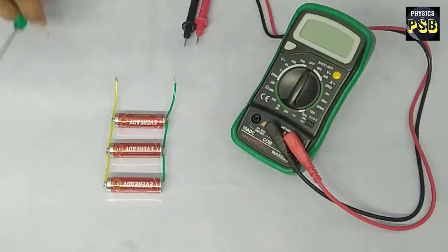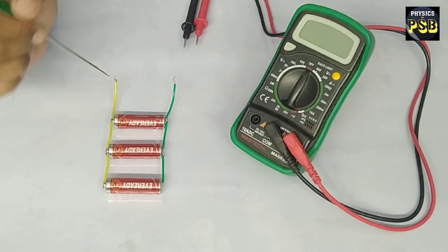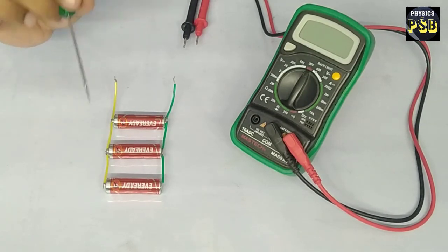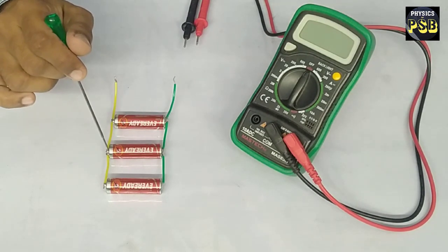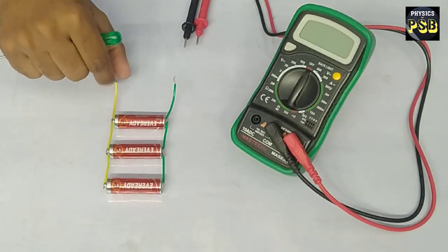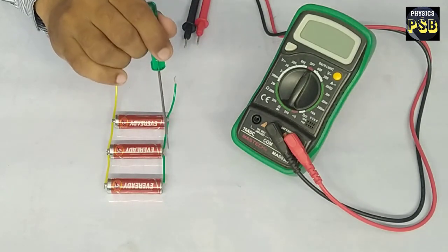Here I have taken three electric cells. I have connected them in parallel. When I say parallel connection, it means all the positive terminals are connected to a common point. Similarly, all the negative terminals are connected to a common point.